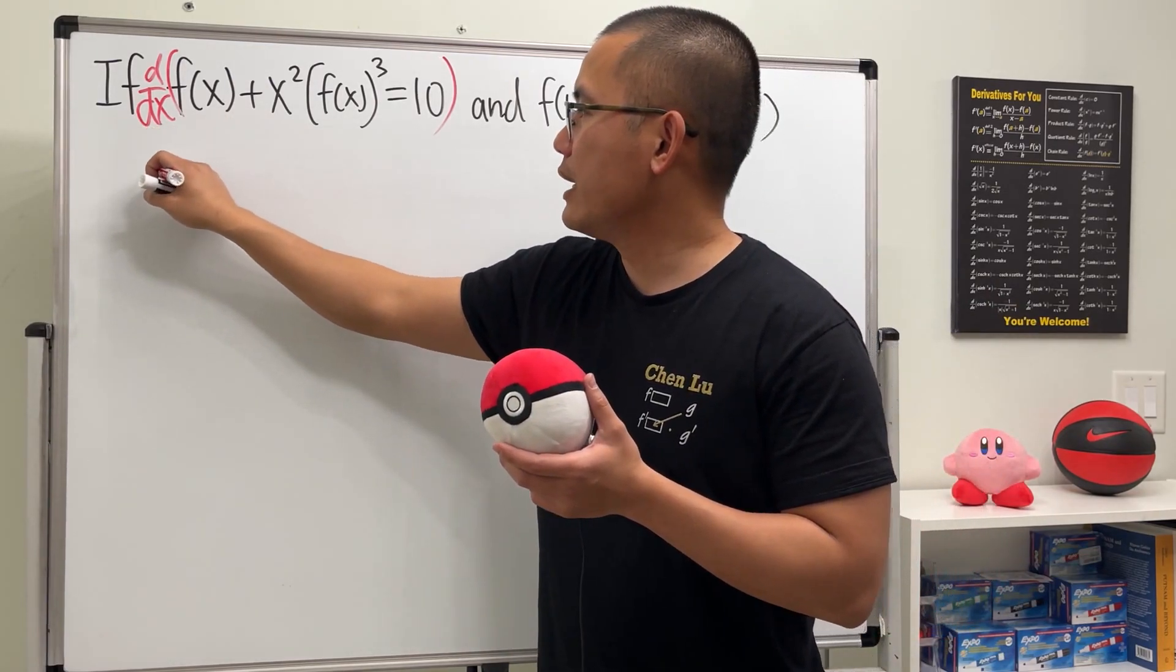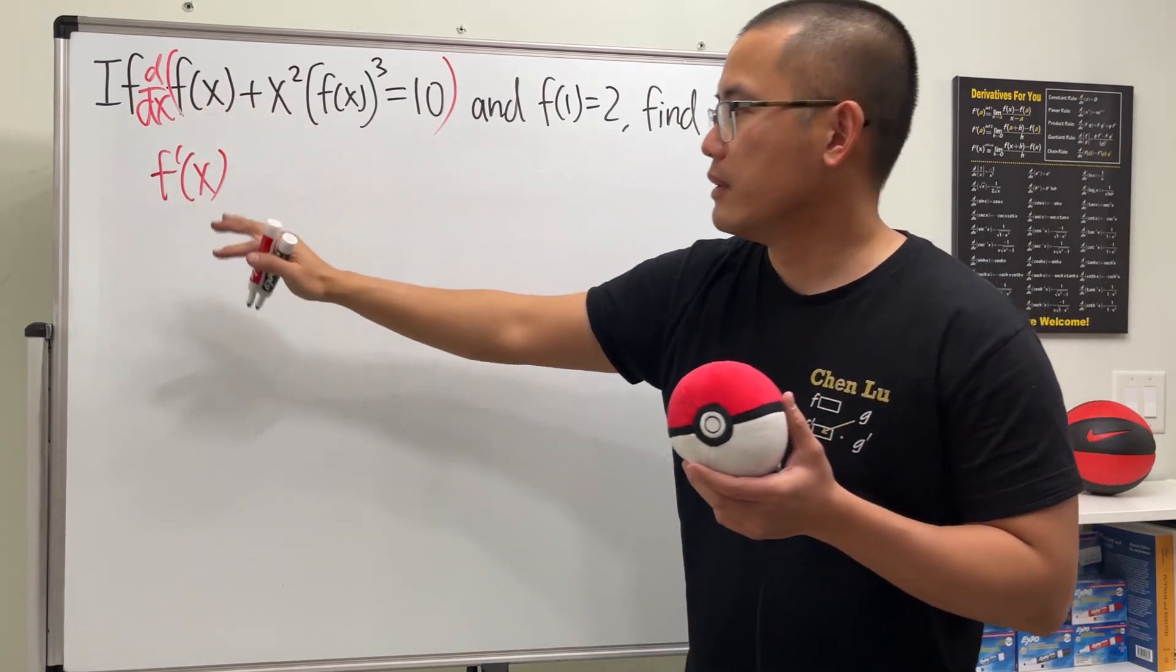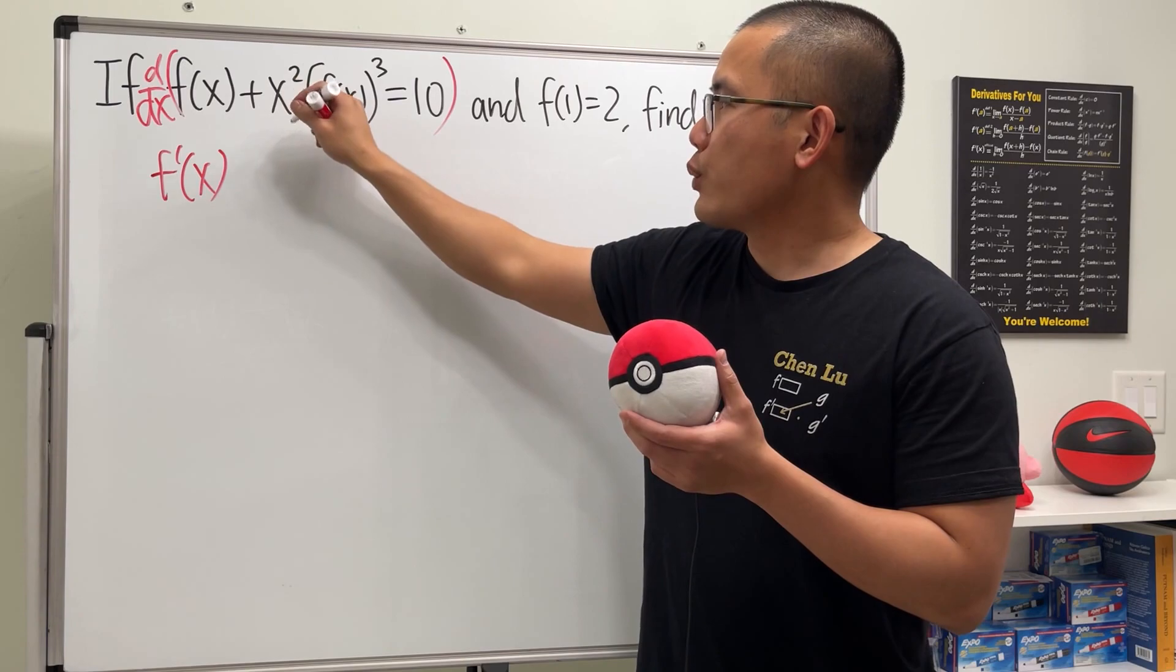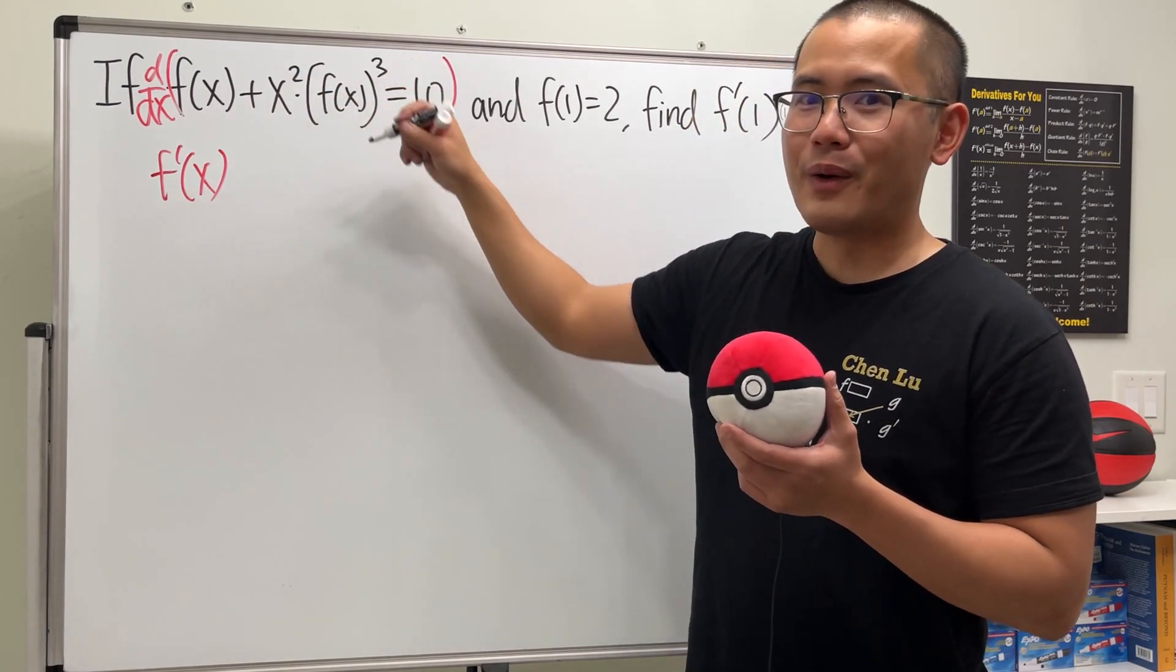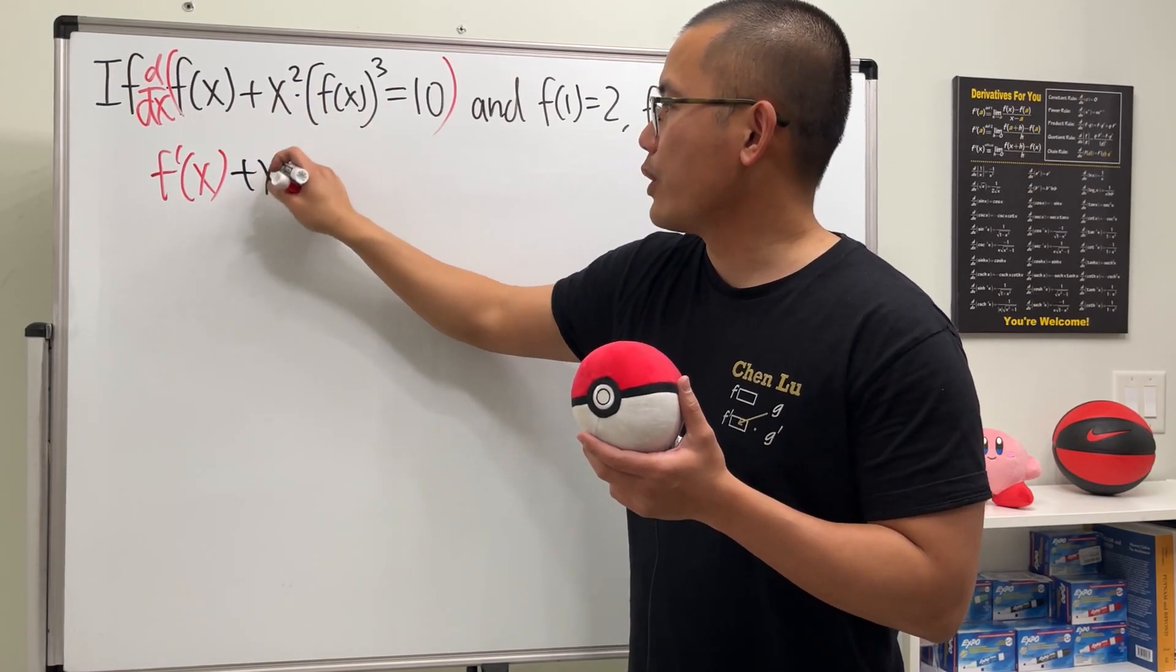Firstly, when we differentiate that, we will get f prime of x, right, because that's the derivative of f in this notation. Next, differentiating x squared times this to the third power, we will have to use the product rule. Therefore, let's keep the first function, which is x squared.